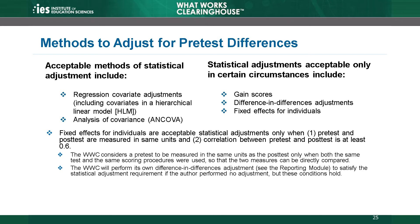Some other methods that assume a fixed relationship between the pretest and the posttest can be used in certain circumstances. Specifically, gain scores, difference-in-differences adjustments, and fixed effects for individuals are acceptable statistical adjustments when two conditions hold. First, the pretest must be measured using the same units as the posttest. The WWC will consider a pretest to be measured in the same units as the posttest only when both the same test and the same scoring procedures were used, so that the two measures can be directly compared.